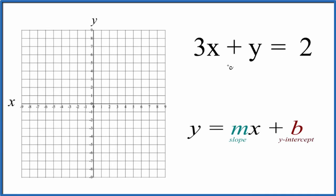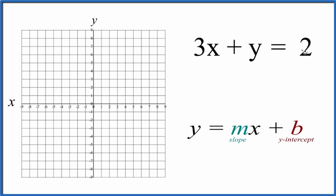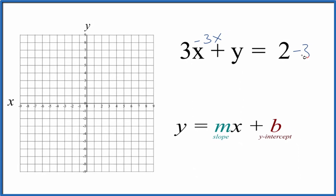Let's graph the linear equation 3x plus y equals 2, and we're going to use slope-intercept form to do that. So what we need to do is rearrange this equation so it's in slope-intercept form, which means we need to get y all by itself. Let's subtract 3x from both sides.